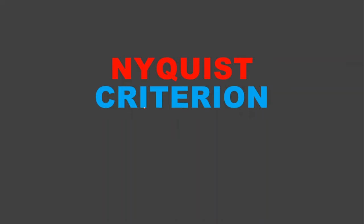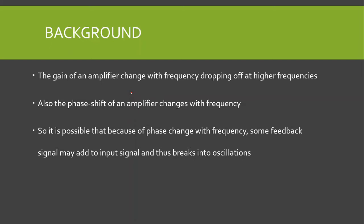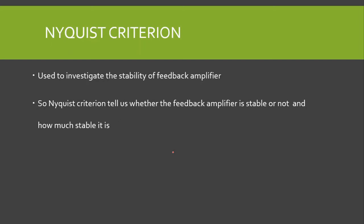Bismillahirrahmanirrahim, Assalamu Alaikum. Welcome to Technical Explained. In this lecture we are going to study the Nyquist criteria. We have studied in previous lectures that an amplifier with negative feedback is stable and with positive feedback is unstable. We also learned that the gain of an amplifier changes with frequency — especially it drops off at higher frequencies — and the phase shift also changes with frequency. So it is possible that because of this phase change, some feedback signal might be added to the input signal, causing the amplifier to break into oscillations.